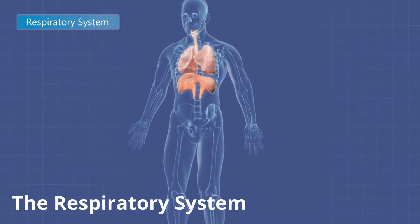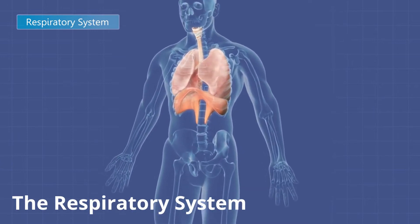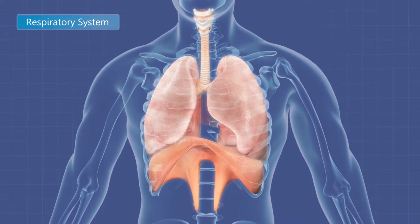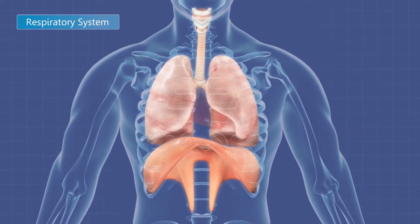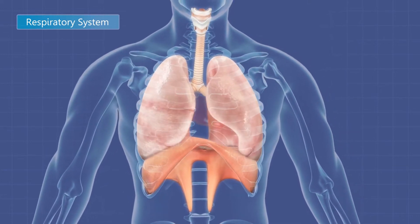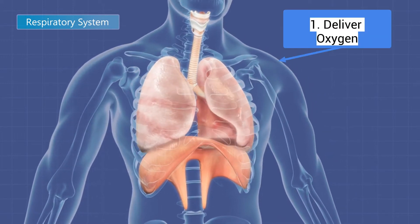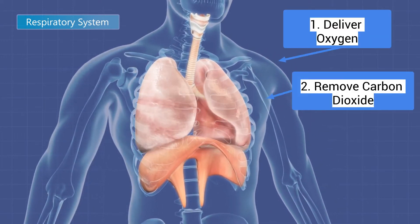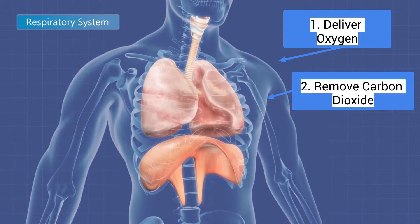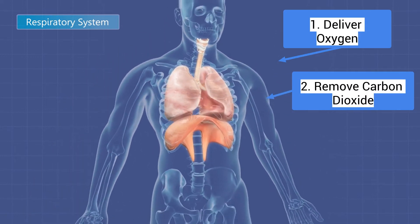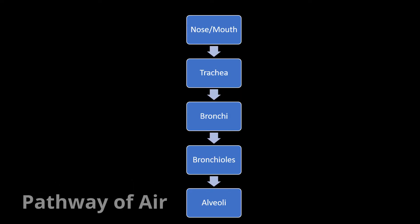The respiratory system is the network of organs and tissues that help you breathe. It includes your airways, lungs, and blood vessels. The respiratory system has two main jobs: to deliver oxygen to your muscles and to remove the waste product carbon dioxide. We need to understand the pathway that air takes through the respiratory system.